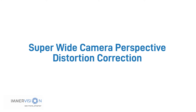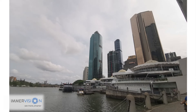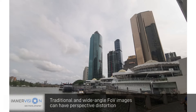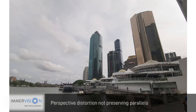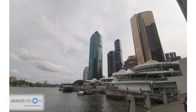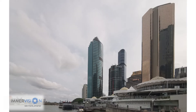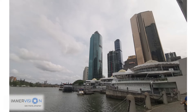Another aspect of distortion in super wide-angle lenses is perspective distortion. Depending on the orientation of the camera, the building can appear distorted, with parallel lines converging to one point — so the parallels are not parallel anymore. Another type of algorithm we can apply is one that corrects perspective distortion.